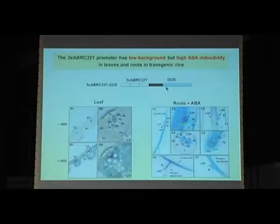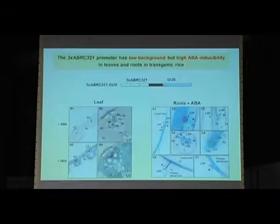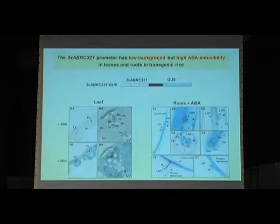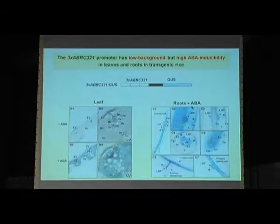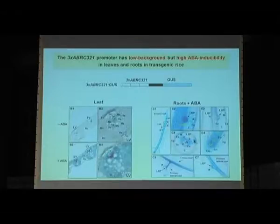We fused GUS with these three ABRC321 fragments. Without ABA treatment, expression in leaves is very low, only in vascular tissue, and in roots activity is barely detectable. But after ABA treatment, expression is widely observed in mesophyll cells in leaves, and in roots it appears in lateral root primordia, root tip, endodermis, and exodermis — consistent with extension of lateral root primordial growth.